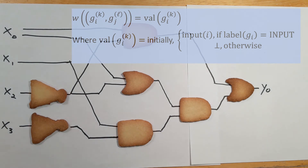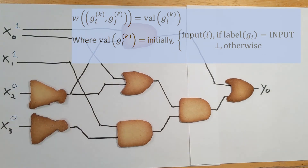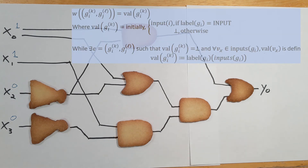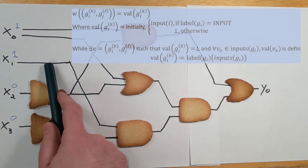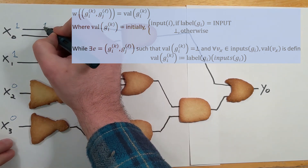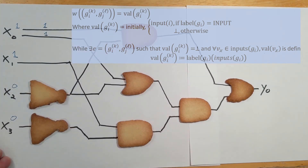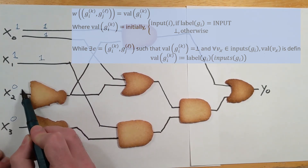The input string I'm going to provide is 1, 1, 0, 0. Now that we have our initial values, we enter the while loop from our definition: so long as I have edges with undefined values and gates whose inputs are all known, I can keep making progress. Right now, every edge whose starting point was one of our inputs now has its W value filled in. So this one is 1 because its source node's value is 1, this one is also 1, and these two should be 0.